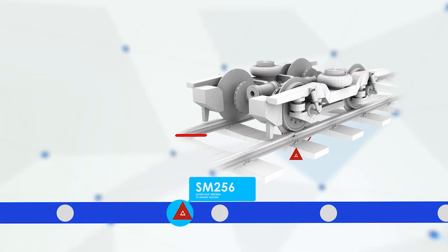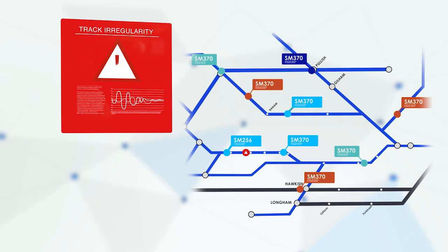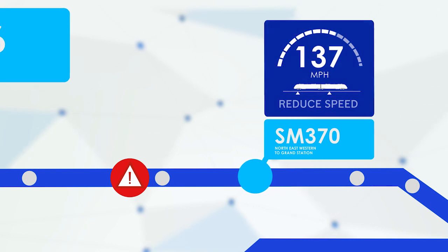You can see here how a track irregularity has been detected. So the information is transmitted to the rest of the fleet and the central command so the appropriate action can be taken.